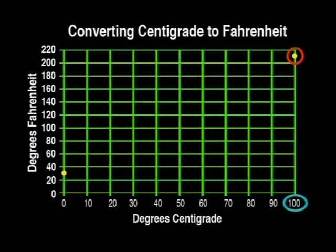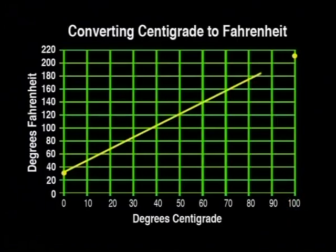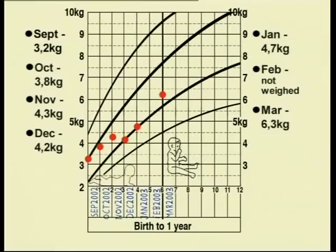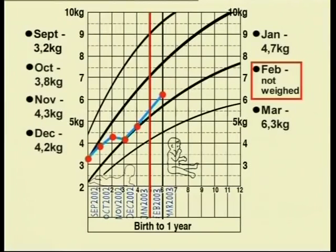KK will use an example that involves converting degrees Fahrenheit to degrees Celsius to demonstrate a line graph. You will notice that the line is straight. In the second example, KK uses the example of a baby's growth. You will notice that this line changes direction according to where the next point is. This is called a broken line graph.